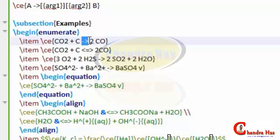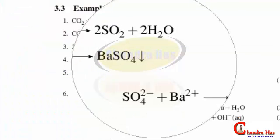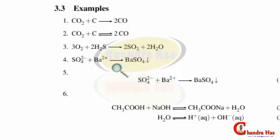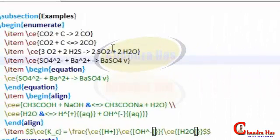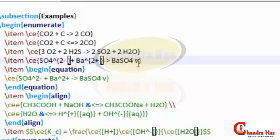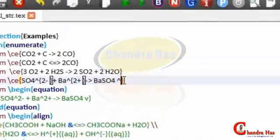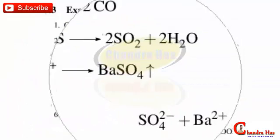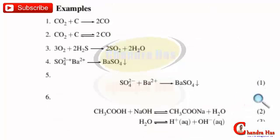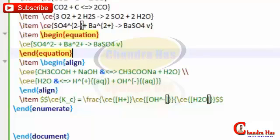Here are some equation examples: CO2 + C -> 2CO. For a precipitate or gas symbol we can use the \ce command — for example \ce{CO4^{2-} v} where small v gives a down arrow indicating a precipitate, and the caret superscript symbol gives an up arrow indicating a gas.